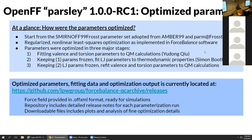How are the parameters optimized? We started from SMIRNOFF99Frosst, which were parameters that Christopher Bayly adopted for maximal closeness to Amber99 and Parm@Frosst. The parameters are optimized by a regularized nonlinear least squares procedure implemented in the ForceBalance software developed in my group. The parameters were optimized in three major stages: first we fitted all valence and torsion parameters to QM calculations, then we froze those and Simon optimized the Lennard-Jones parameters to reproduce thermodynamic properties, then we froze those and re-optimized the bonded parameters again - that's where we reached our release candidate.